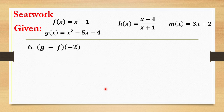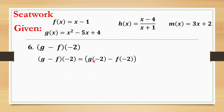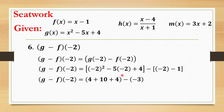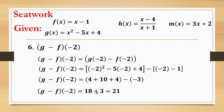For number 6, subtraction. We have g minus h evaluated — gagawin lang natin i-substitute yung value ng negative 2 sa mga x. So g(x) is x squared minus 5x plus 4, and we add x minus 1. Substituting negative 2: we get positive 4, positive 10, positive 4, and then negative 2 minus 1 is negative 3. So 10 plus 4 plus 4 is 18, plus 3 is 21. Yung ating answer for number 6 is 21.